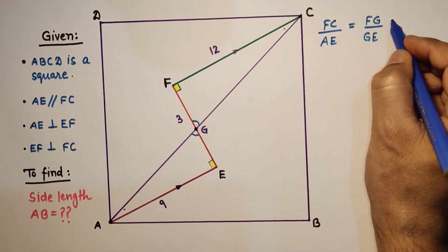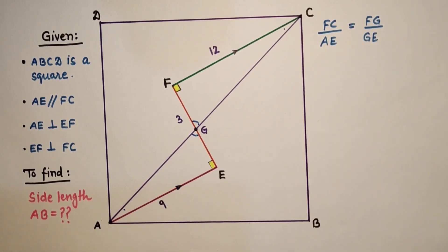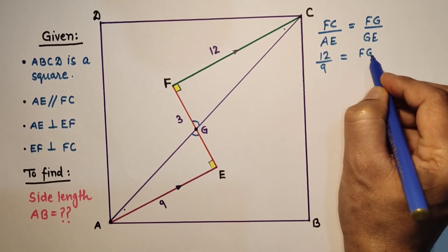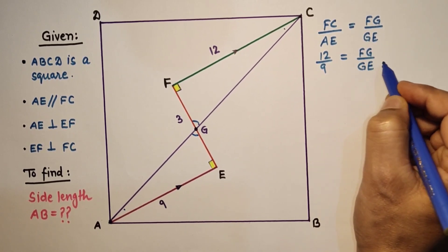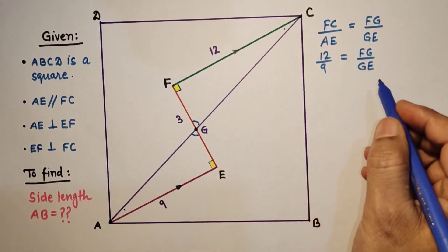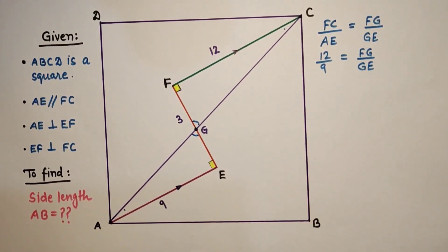And that is what FC by AE is 12 by 9, FG by GE. So if we take FG as 12K, then GE will be 9K, where K is any constant.